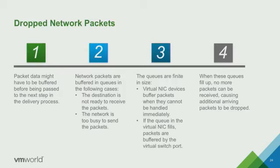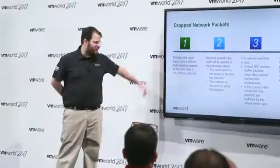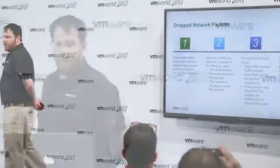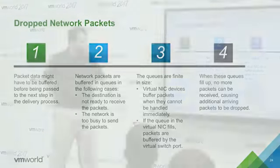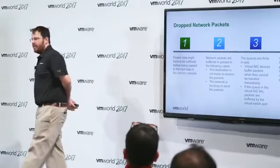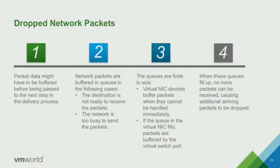When we look at drop network packets, packet data might be buffered before being passed to the next step — they get buffered in queues. Queuing is not good. Eventually if you're queuing, the queue overflows and we get drop packets. Different NICs have different queue depths — it could be a queue depth of 32 or something more significant. Virtual NIC devices also buffer packets when they can't be handled immediately, but they will fill up and start dropping too. We look at load-based teaming considerations and add physical NICs as needed.